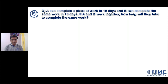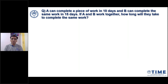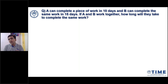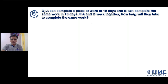I hope you have noted down the question. In this question, they are saying: A can complete a piece of work in 10 days, and B can complete the same work in 15 days. If A and B work together, how long will they take to complete the same work? This is a very simple question to understand the concept.